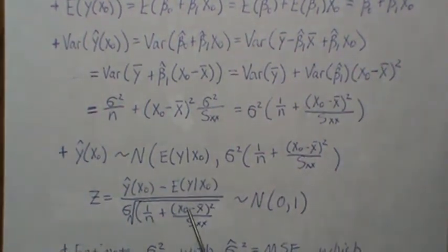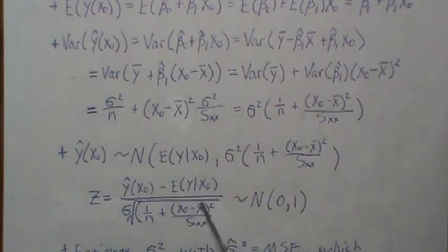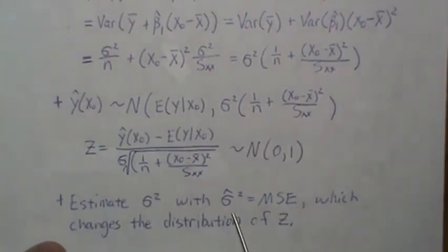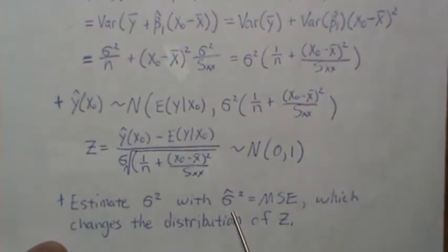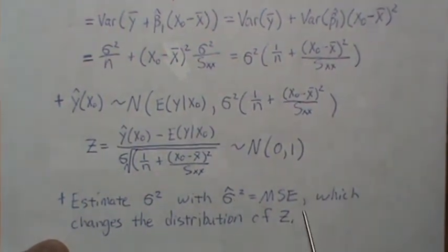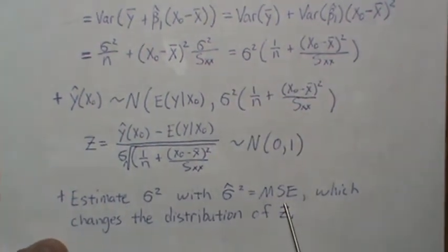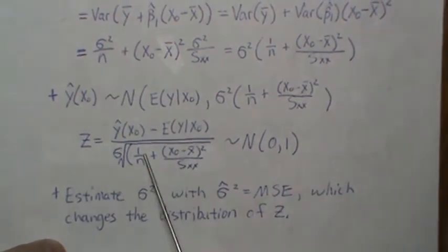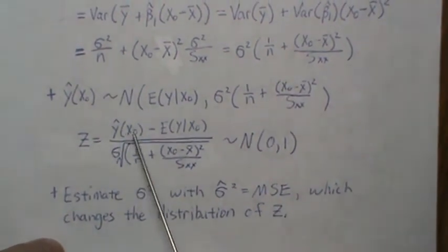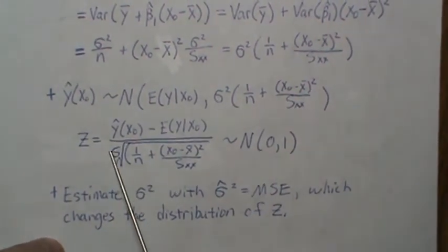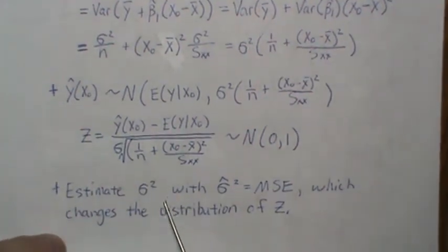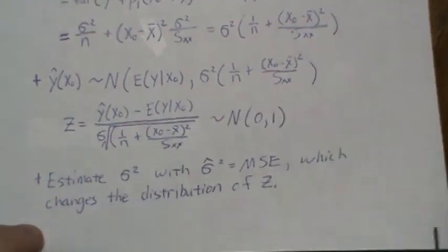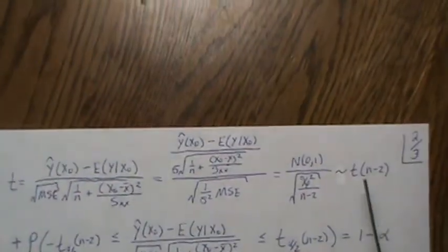We could potentially use this standard normal to find a confidence interval, but we don't know sigma — that's a population variance. So we need to estimate sigma squared with sigma-squared-hat, which is the mean square error: the sum of squared residuals divided by n minus two. But substituting an estimate changes this from a standard normal Z distribution. Some people say just plug in the estimated standard deviation and it becomes a t — and technically in this case it does, but it's usually not that simple.